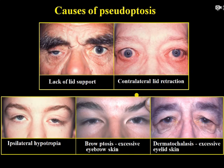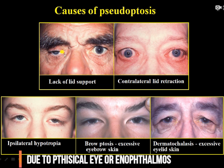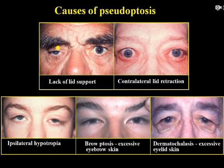What is pseudoptosis? Pseudoptosis is a condition in which the eye looks like it has ptosis but actually there is a problem with the other eye or some other cause. For example, a lack of lid support in the right eye can give the feeling of ptosis, but actually it is not ptosis.